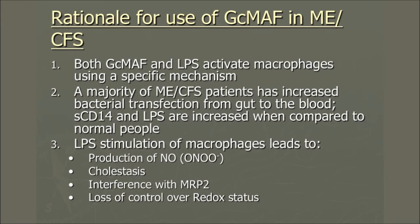LPS stimulation of macrophages leads to production of nitric oxide. Everybody knows Martin Paul and the whole story about CFS and nitric oxide — the production of a very strong free radical, which is peroxynitrate. But it also leads to cholestasis, and if you have cholestasis, you're going to have digestive problems, a slowing of peristalsis, less bile coming into your digestive tract, and so on. There is also an interference with MRP2 — multiple resistance protein 2 — which is also involved in ME/CFS. That's too long a story for today, but it's something we'll publish soon. And there's a lot of dysregulation of redox status in ME/CFS patients.